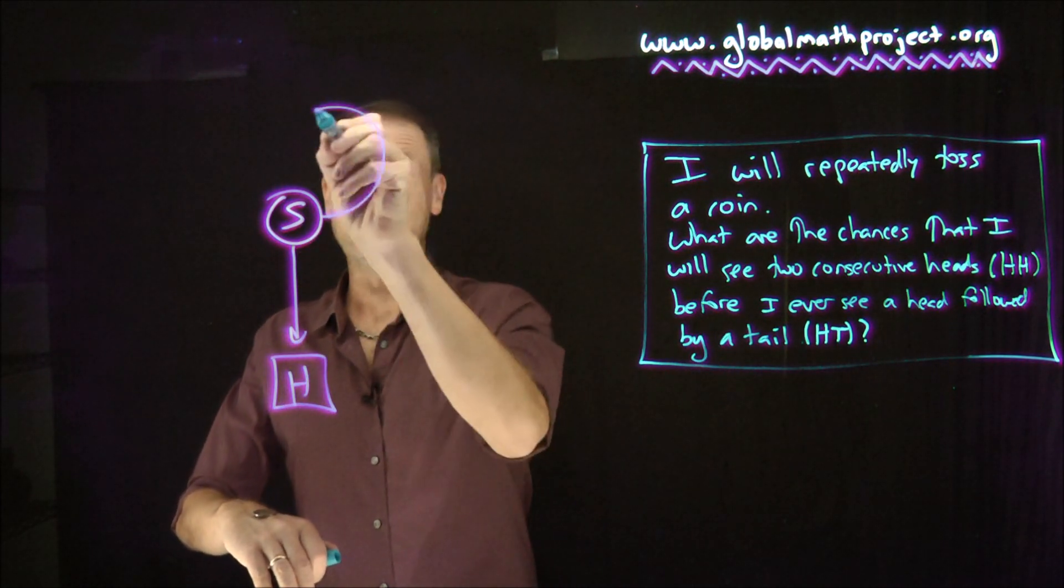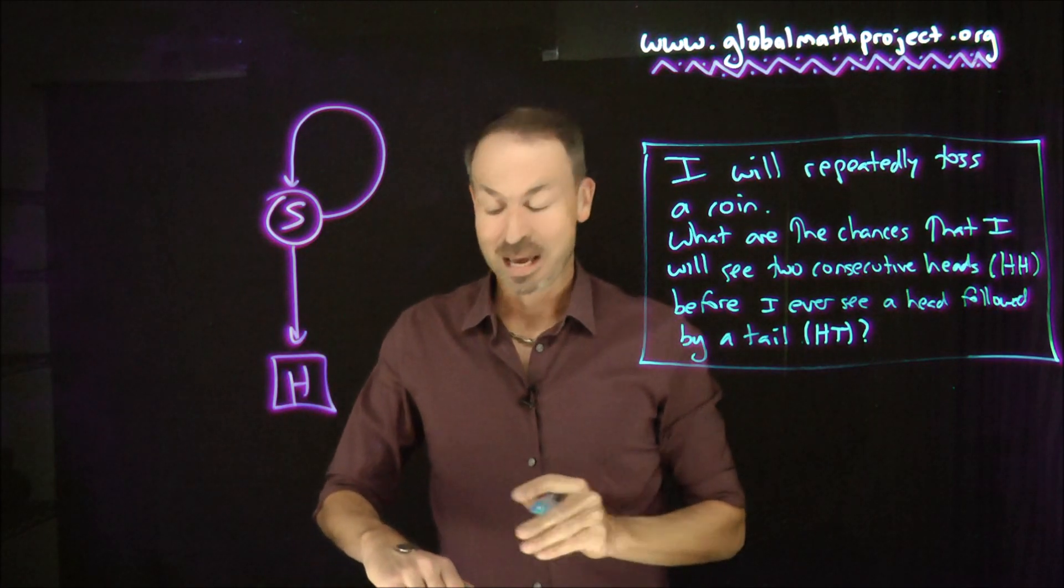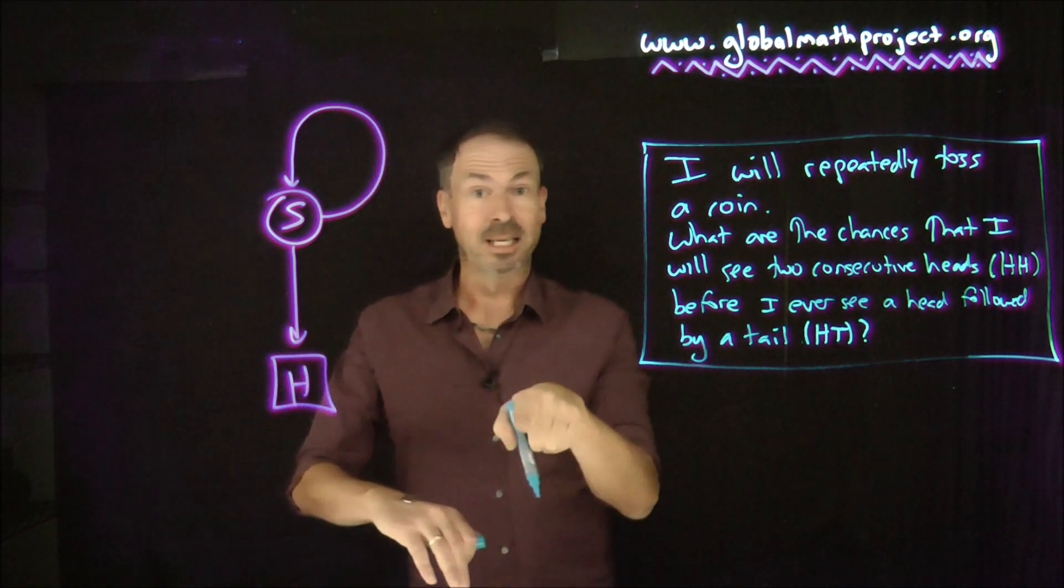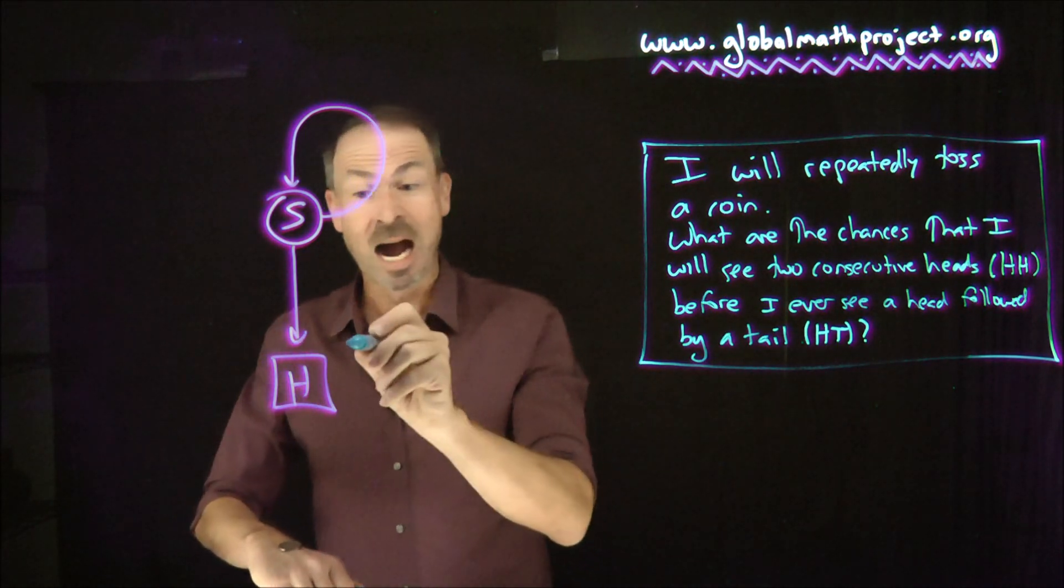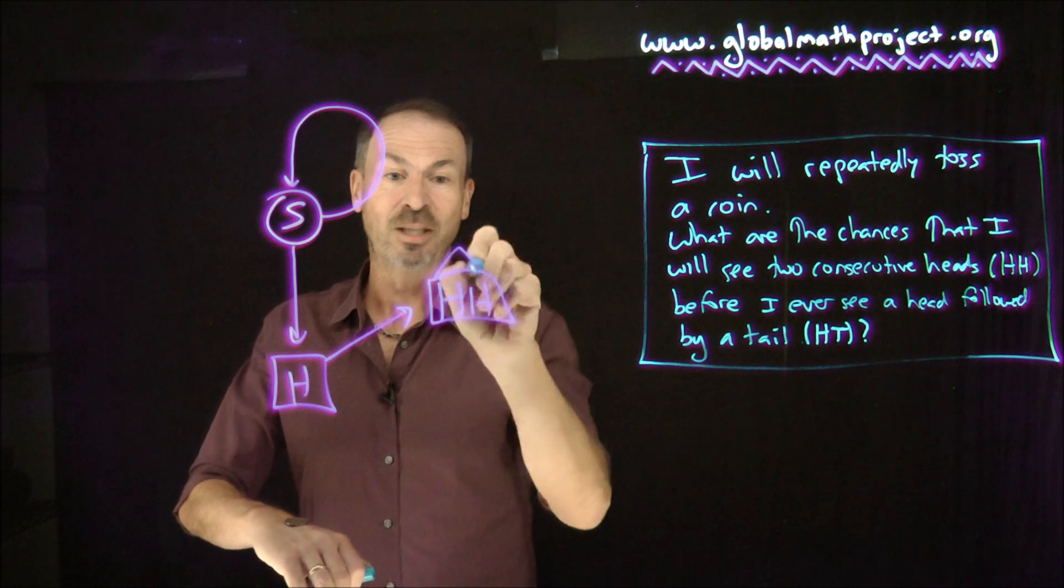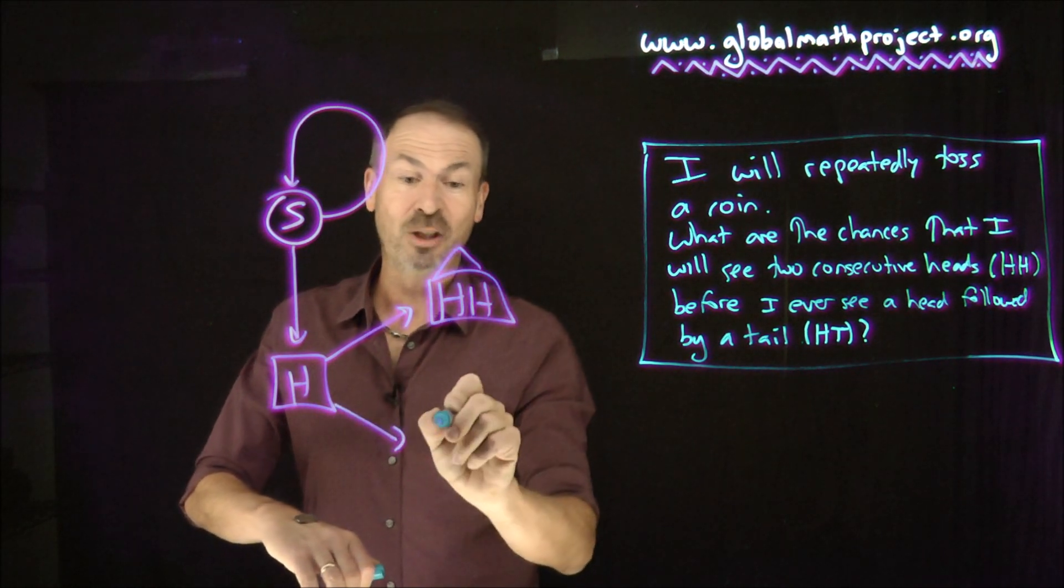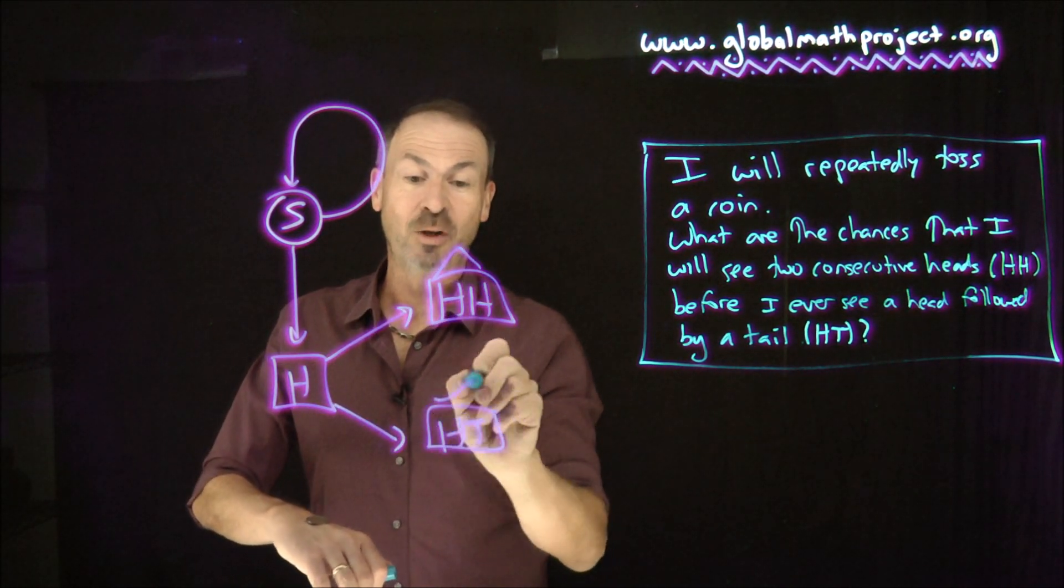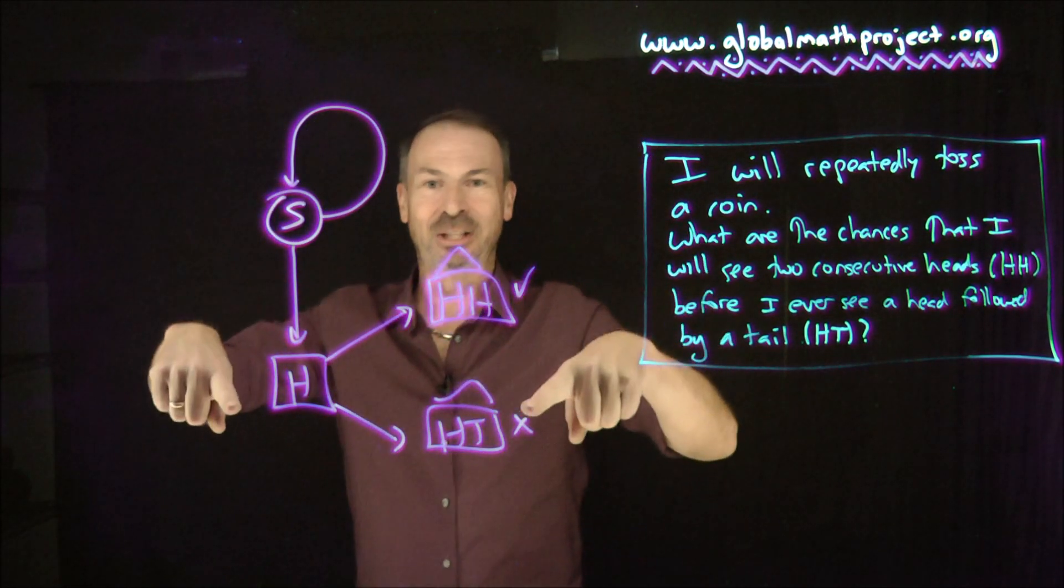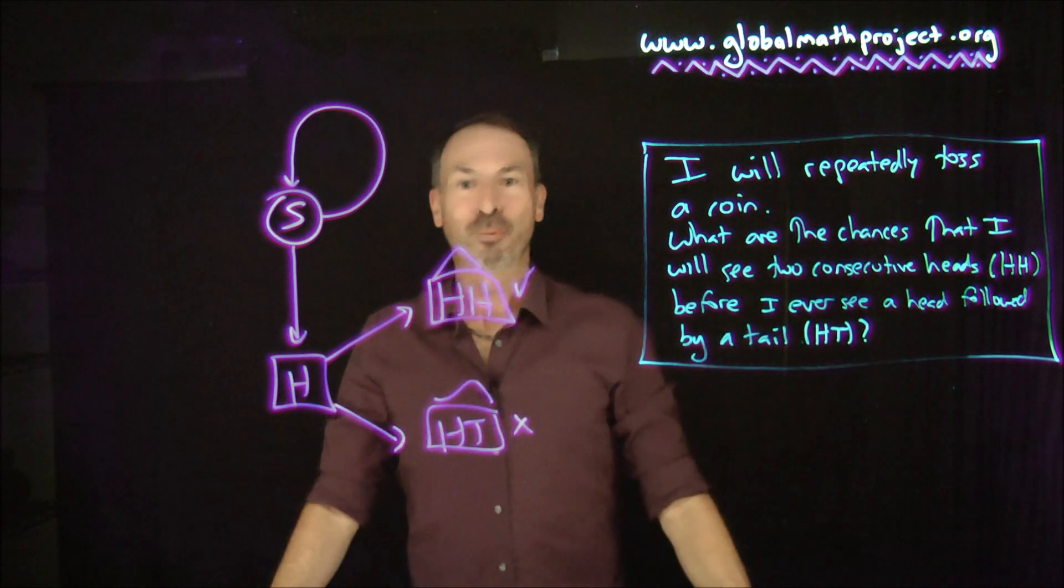If I'm in this head spot right now, then what do I do next? Well, I have to flip a coin again, and I will either get another head, in which case I'm in the head-head house, which is what I want, or I get a tail, in which case I'll be in the head-tail house, which I don't want. So there is an infinite garden path system that represents that problem.